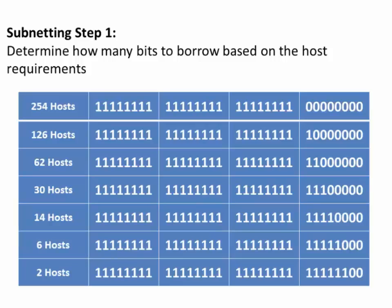Looking at this diagram, we can see the number of usable hosts based on bits borrowed from the last octet of the subnet mask. If there are 8 zeros in the last octet, we have 254 usable hosts. If there are 7 zeros, 126 usable hosts. 6 zeros gives 62 usable hosts, and so on. If there are 4 zeros, 2×2×2×2 is 16, minus 2 leaves 14 usable hosts. We subtract 2 because the first address in the subnet is the network address and the last address is the broadcast address.